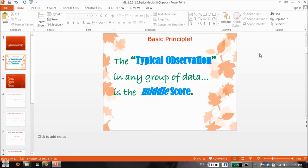Let's just look again at this basic principle. The typical observation of any group of data is the middle score.